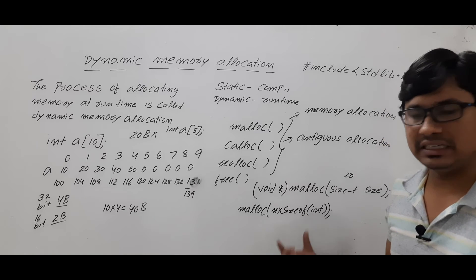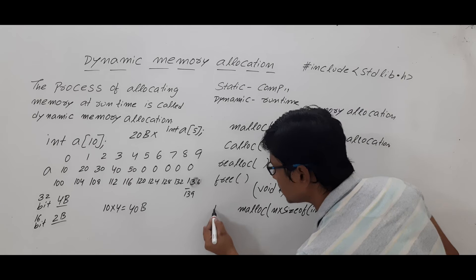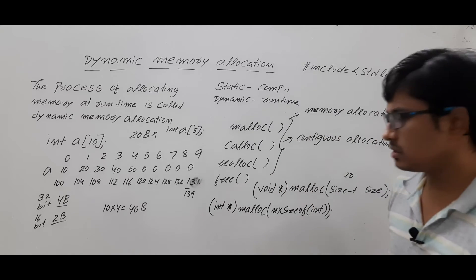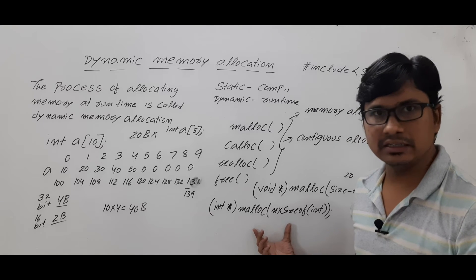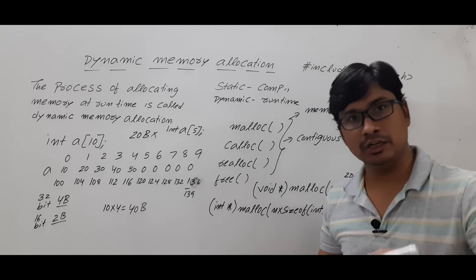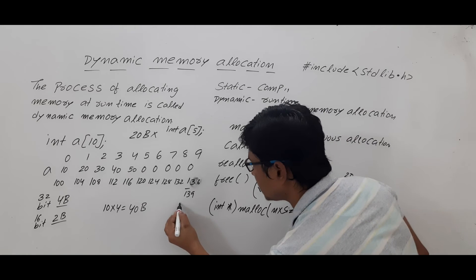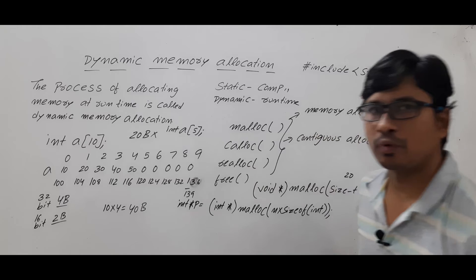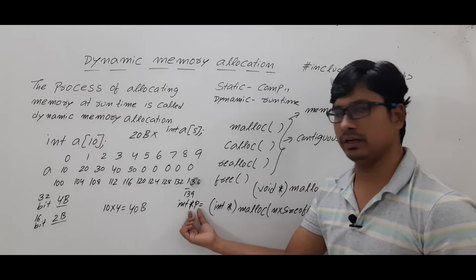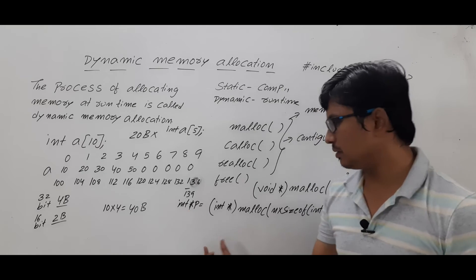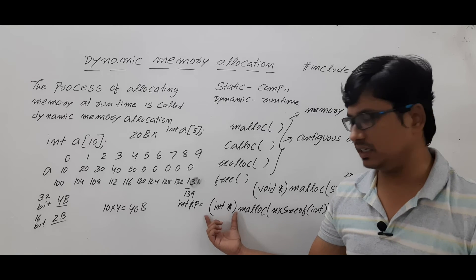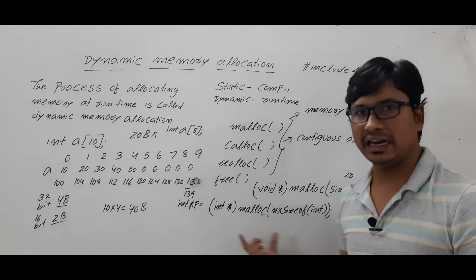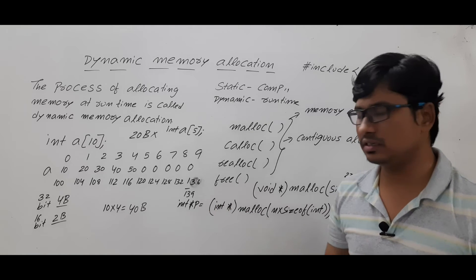Since you are storing integers, you must do typecasting because the base address of integers must be stored by an integer pointer. So you typecast the void pointer and assign it to an integer pointer p. If you want to store characters instead, you do the typecasting accordingly.